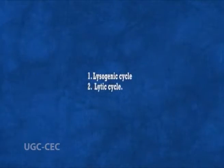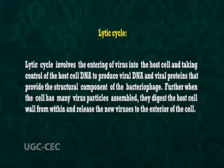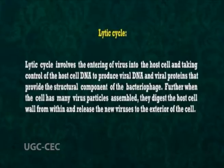The lysogenic cycle and the lytic cycle are the two reproductive processes seen in bacteriophages. When the infection of the cell by a bacteriophage results in the production of new variants, the infection is said to be productive. The lytic cycle involves the virus entering the host cell, taking control of the host cell DNA to produce viral DNA and viral proteins that provide the structural components of the bacteriophage. When the cell has many virus particles assembled, they digest the host cell wall from within and release new viruses to the exterior.